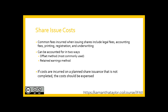When looking at share issue costs—which include legal fees, accounting fees, printing, registration, and underwriting—these can be accounted for in two ways: the offset method or the retained earnings method. The offset method, most commonly used, directly reduces the proceeds from the sale by debiting share capital. The retained earnings method debits costs directly to retained earnings, allowing gross proceeds to remain in share capital but reducing retained earnings. Under both methods, shareholders' equity as a whole remains unchanged. However, if costs are incurred on a planned share issuance that does not happen, these costs should be expensed immediately to the income statement.